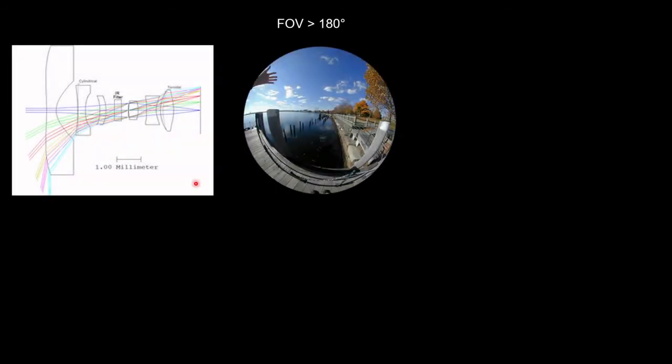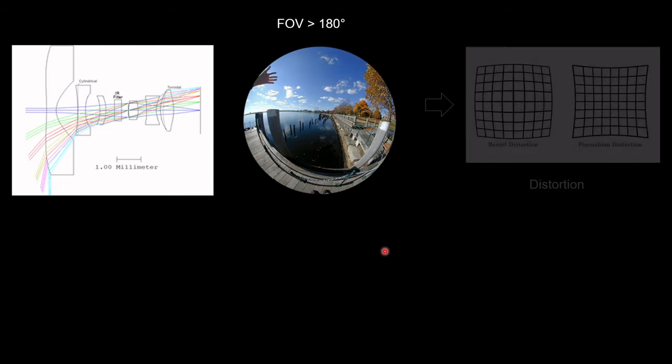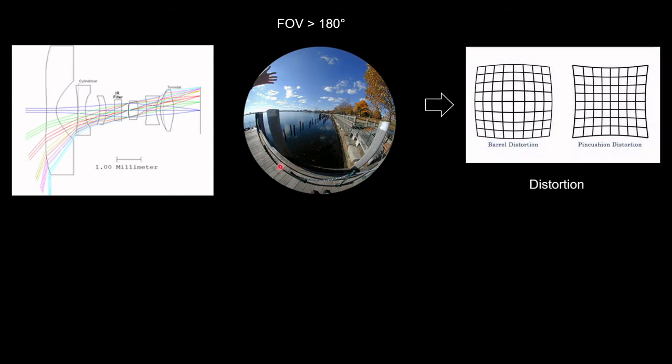However, to capture rays with a large angle of incidence, those systems are designed with a highly negative bent-first optical element that will induce a strong apparent distortion. This phenomenon leads to bent lines and a modification of object proportions, especially on the edges of the image.